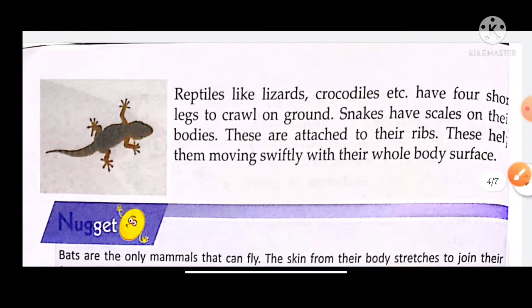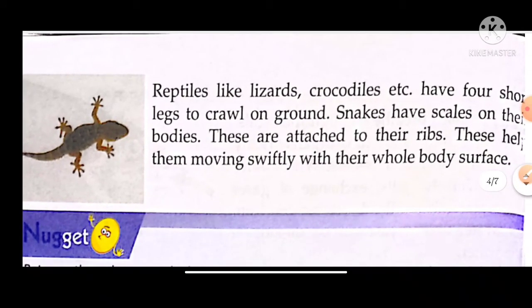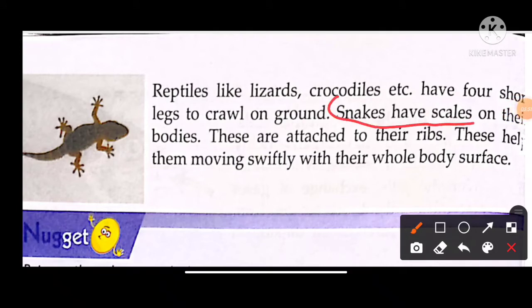We can talk about reptiles such as lizards and crocodiles, which have four short legs to crawl on the ground. For reptiles, all four limbs are roughly equal because they crawl on the ground. Snakes are also reptiles. They have scales on their bodies. These scales are attached to their limbs and help them move swiftly, using their whole body surface for movement.